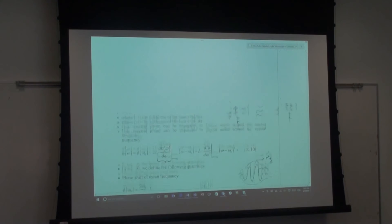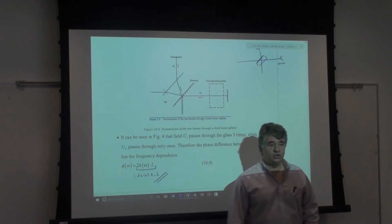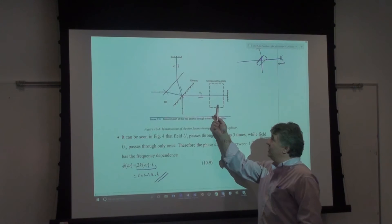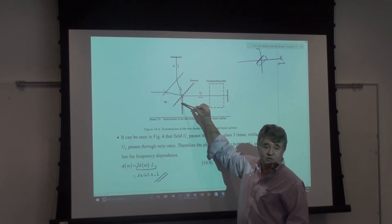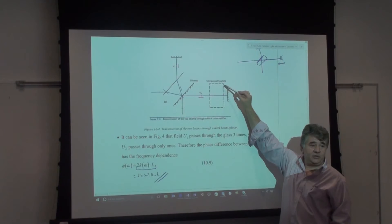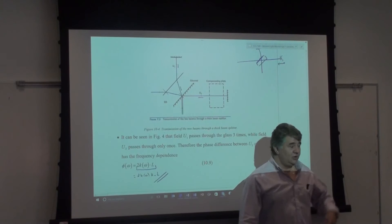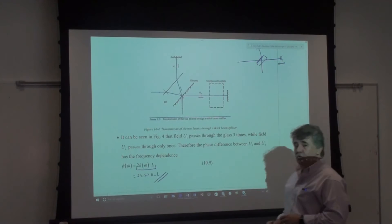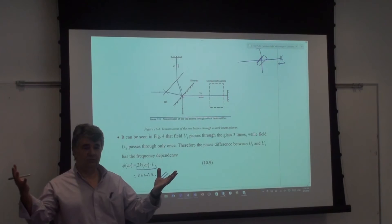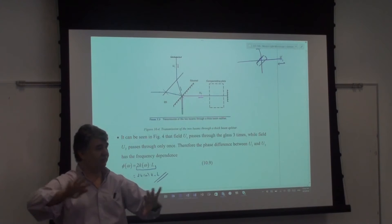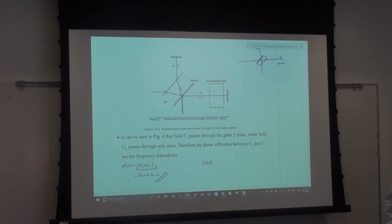Michelson himself, without knowledge of Fourier theory or Kramers-Kronig, noticed that dispersion changes fringe appearance and found the solution: if one beam passes through a glass plate three times and the other only once, add an identical glass plate to the single-pass arm to match the dispersion. The interferometer only cares about the differential dispersion between the two arms — if both arms have identical glass, the dispersion cancels completely.